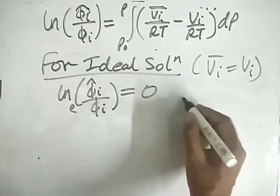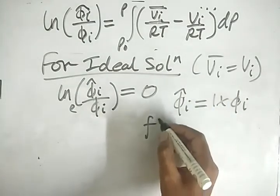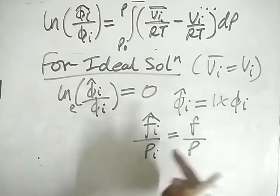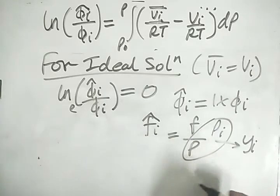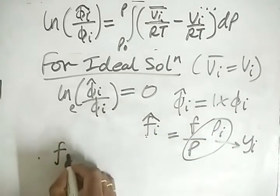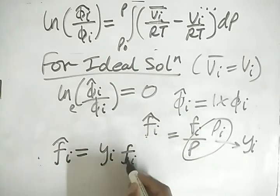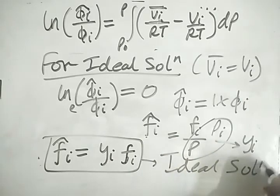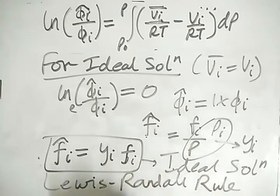For an ideal solution, since Vi-bar = Vi, the integrand (Vi-bar − Vi) is zero, so ln(φi-cap / φi) = 0, meaning φi-cap = φi. Therefore fi-cap / pi = fi / P, and since pi = yi·P, we get fi-cap = yi·fi. This is known as the Lewis-Randall Rule, and it is true for ideal solutions.